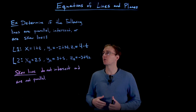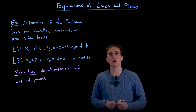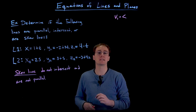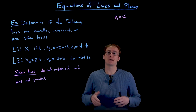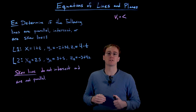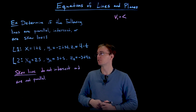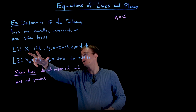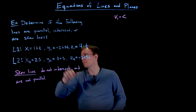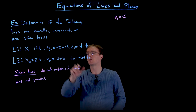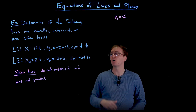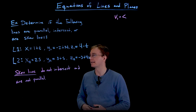We can start by answering the question: are these two lines parallel? We look at the direction vector for each line. Two lines are going to be parallel if they're pointing in the same direction, meaning their direction vectors are parallel vectors.